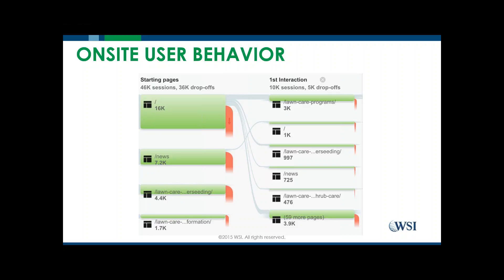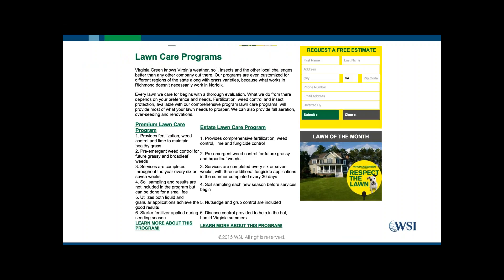It's important to remember that people take an endless combination of different paths throughout your website — there is no predefined linear path to converting, unless you're an e-commerce site with a shopping cart. We have to go back to the Pareto principle: what are the top pages that produce most of the results, and then attack those pages. We found that 60% of the people who didn't bounce off the homepage went to the lawn programs page. So that became the page we focused on, and this is what that page used to look like.